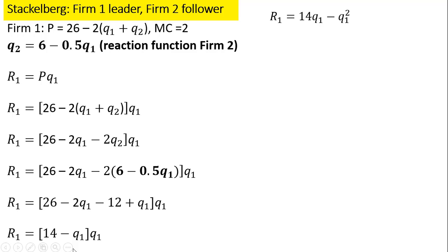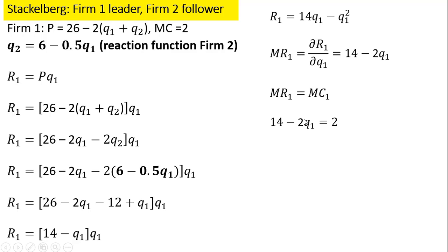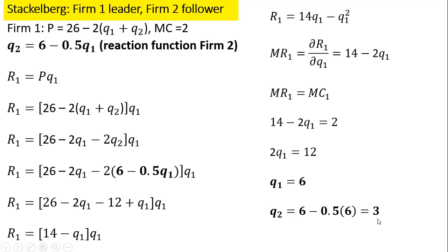After simplifying the revenue expression, marginal revenue for firm 1 is 14 minus 2Q₁. Setting marginal revenue equal to marginal cost and solving: 12 divided by 2 gives us Q₁ = 6, so firm 1 produces 6 units of output. Plugging 6 back into firm 2's reaction function, firm 2 produces 3 units. In the Stackelberg model with identical cost structures, the leader produces twice as much as the follower. Evaluating the inverse market demand at total output of 6 plus 3, the market price is $8.